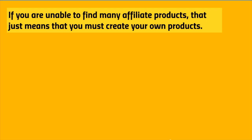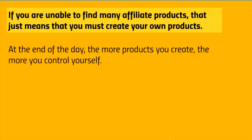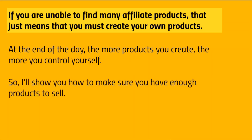If you're unable to find many affiliate products, that means you'll need to create your own or find PLR products. At the end of the day, the more products you create the more you control — you own them. If you have five different products you can cross-sell: if somebody buys product one, you present them with products two, three, four, and five. If they like you and your products, they're more likely to buy the others. You can pretty much do whatever you wish when you own the product.